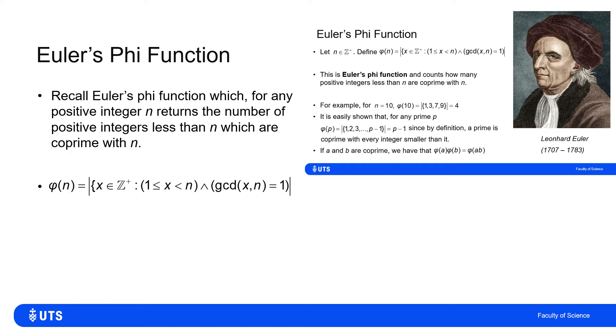Remember that we said numbers x and n, positive integers x and n, were coprime if their greatest common divisor was 1. That is, there were no integers larger than 1 which divided into both x and n.